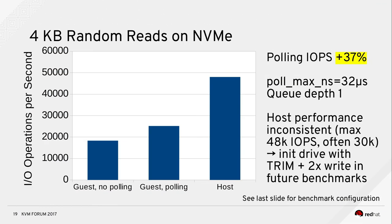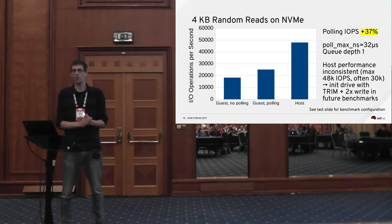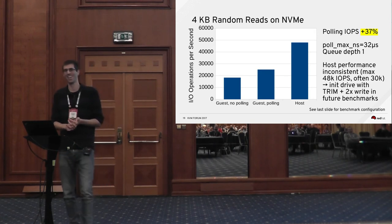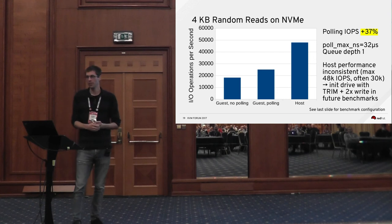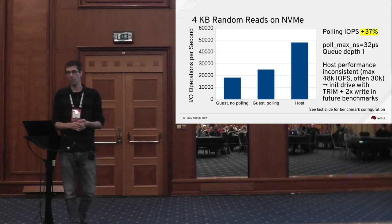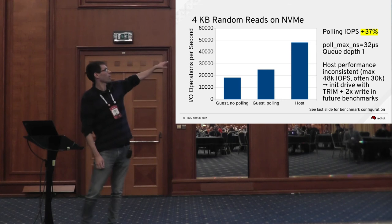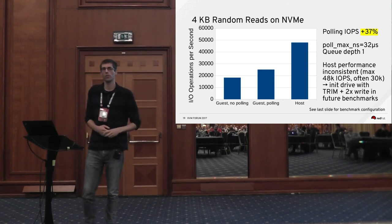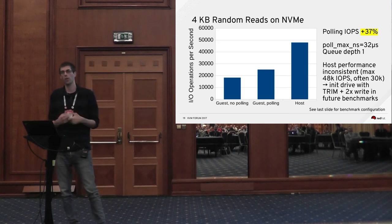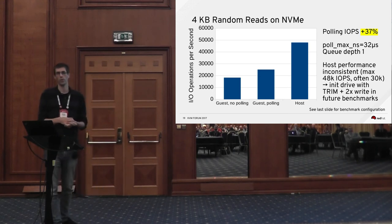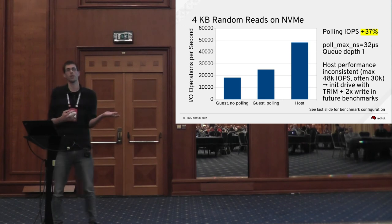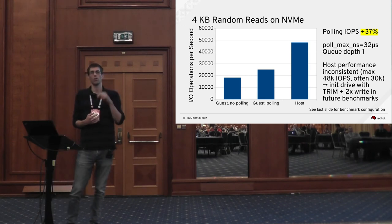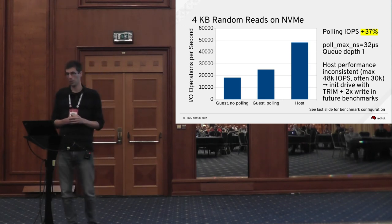For performance results on an Intel NVMe drive with 4K random reads: without polling versus with polling, polling increased the IOPS by 37%. That's a very nice increase showing that by eliminating this overhead, we've cut out a significant chunk of IO latency. This is with QDepth 1 — just a reminder, this is all about latency-sensitive workloads.